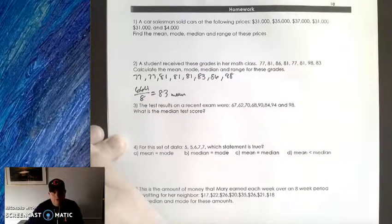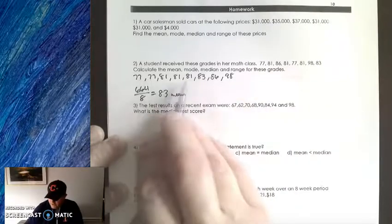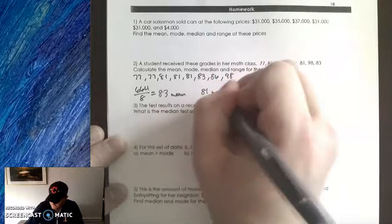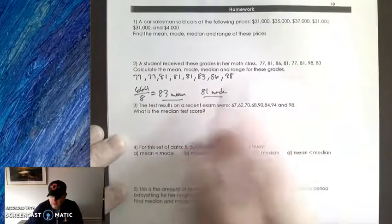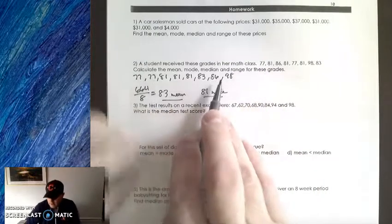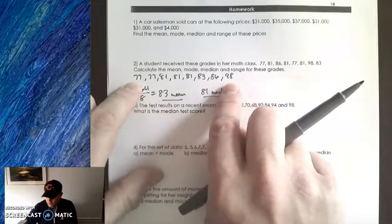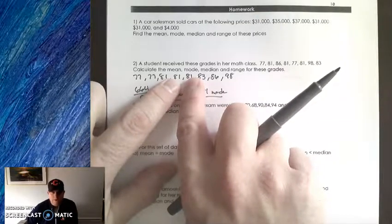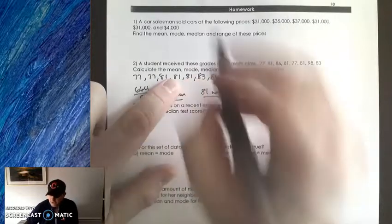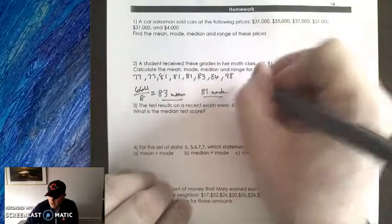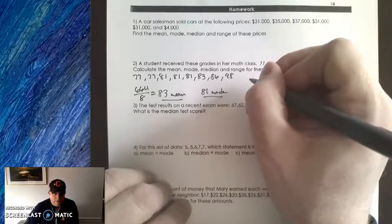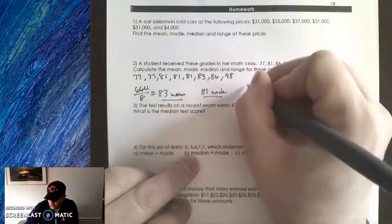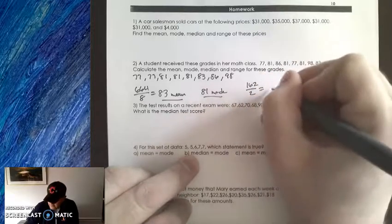The mode is the number that comes up the most, the most frequent number. There's two 77s, there's three 81s, and 83, 86, and 98. So 81 is the mode. Now, the median. The median is the middle number. When we look for that middle number, we kind of go from the outside in. So 1, 2, 3, 4. We actually don't have a single middle number. Usually when there is an even amount of elements, your median is going to be in between two numbers. In this case, it's in between 81 and 81. So the median is 81. But if there are two different numbers, what you do is you add the two together. In this case, 81 plus 81 is 162, and we divide it by 2. So that is 81, and that is your median.